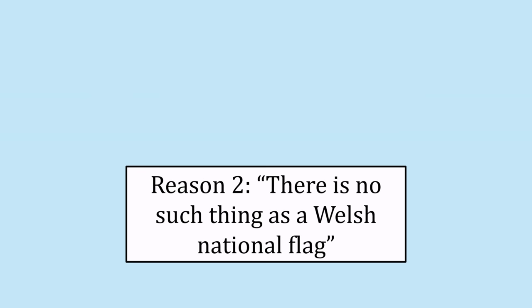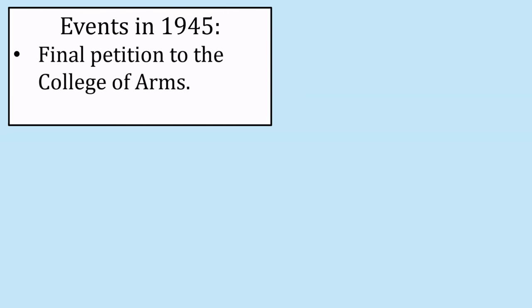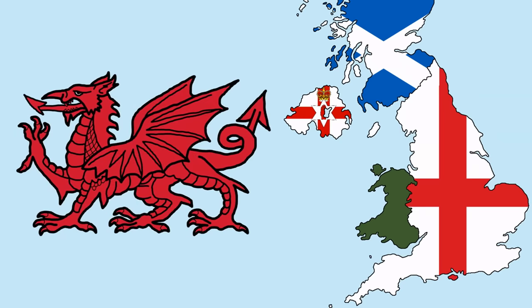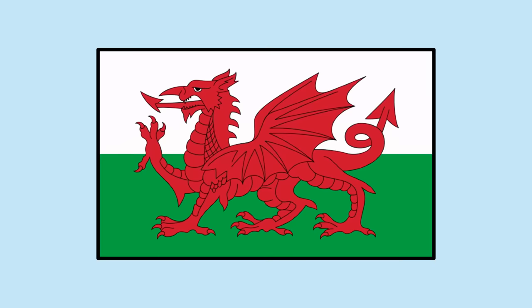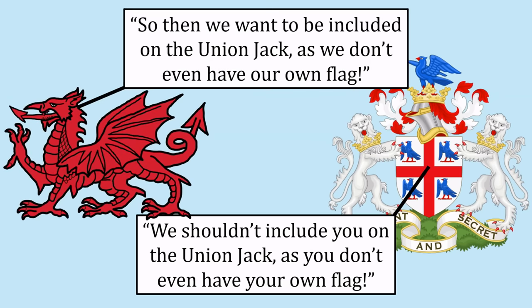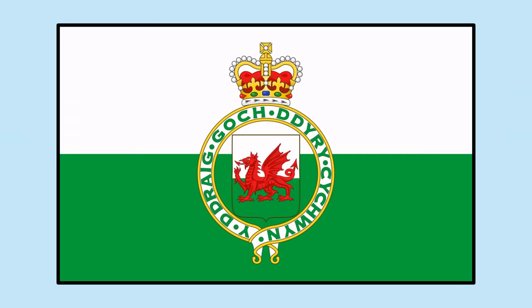The second reason — that there was no Welsh national flag — was true, and it ties into why many Welsh people wanted representation on the Union Jack. In 1945, Wales had no national flag, and it hadn't had one for its entire modern existence. Although the red dragon had been a symbol of the Welsh for centuries, the modern flag of Wales is a very recent creation. The College of Arms' reasoning was deeply ironic: they said Wales shouldn't be included on the Union Jack because they didn't have their own flag, while the Welsh were saying they wanted to be included precisely because they had no flag and no representation. As a compromise, in 1953, the Royal Badge of Wales was designed, but you were only allowed to fly it with official permission — so everyone just flew the unofficial flag instead.